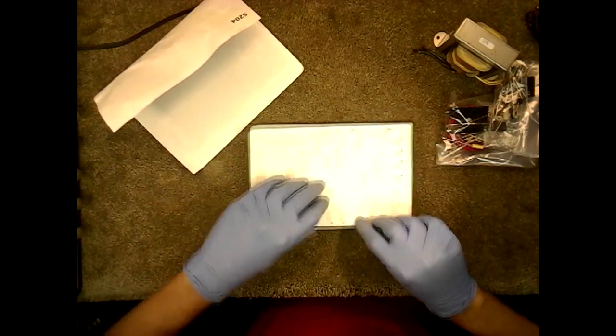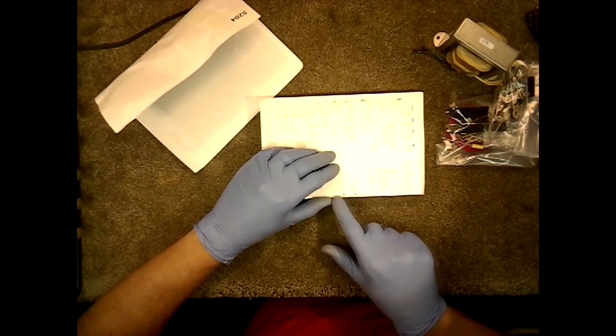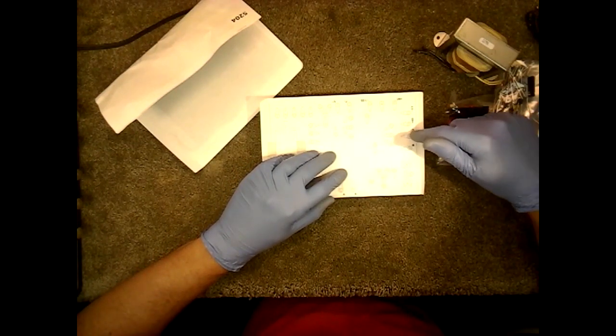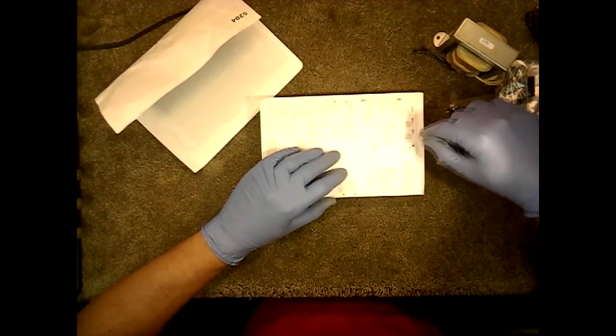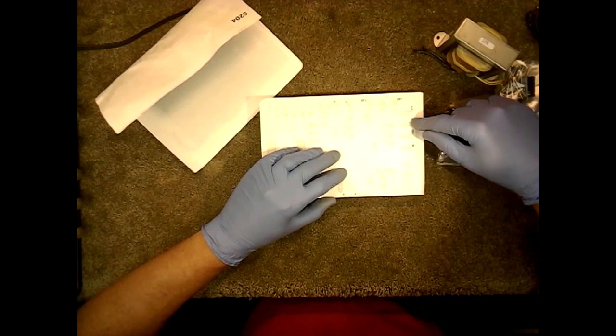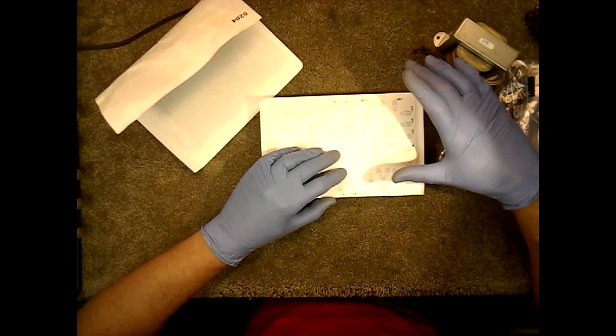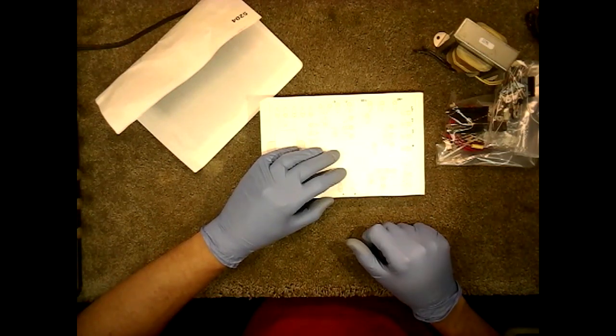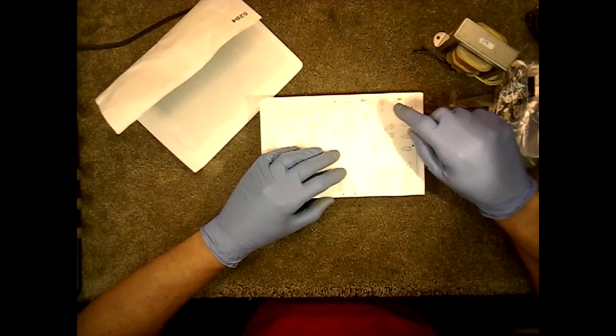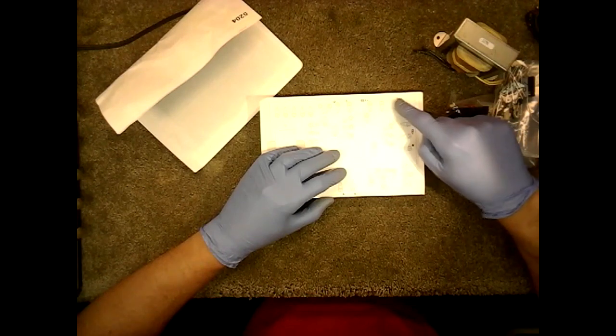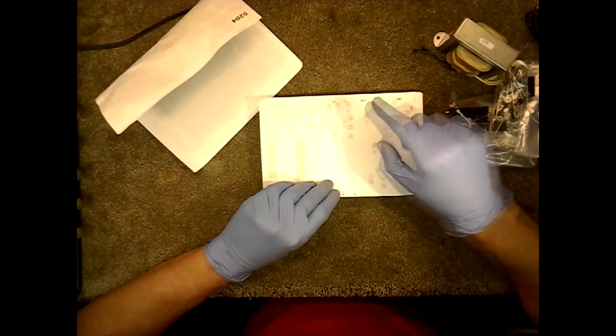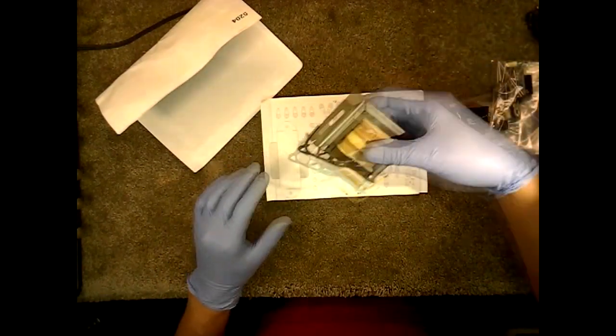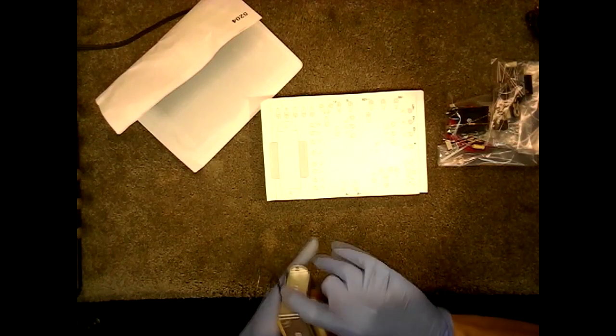You just overlay that, and you see here we have our A plus and A minus, that would be the filament voltage. Here we have our B minus, and then we have numerous B plus power supplies. We have a 22 volt DC, 45, 67, 90, and 135. It shows you where everything goes.